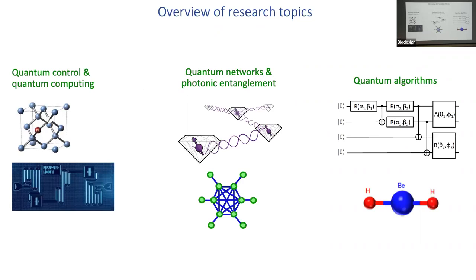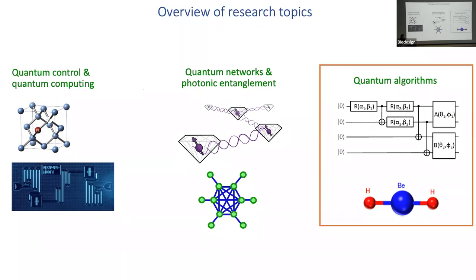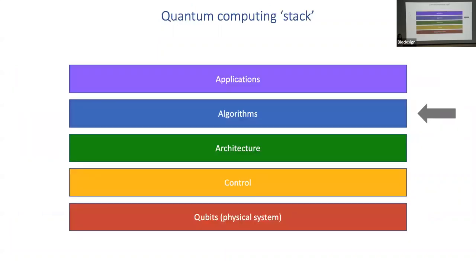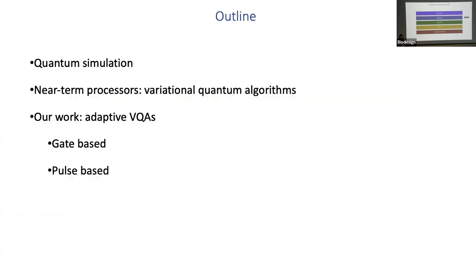In my group, we work across different directions: quantum control and quantum computing closer to the physical layer, quantum networks and photonic quantum information processing, and quantum algorithms. When I was invited, people seemed most interested in the third — quantum algorithms for quantum simulation — so I'll focus the remainder of the talk there. Here's my outline: a few more things about quantum simulation, then focus on the types of systems and algorithms we can develop now, and if time permits, two specific research directions from my group.